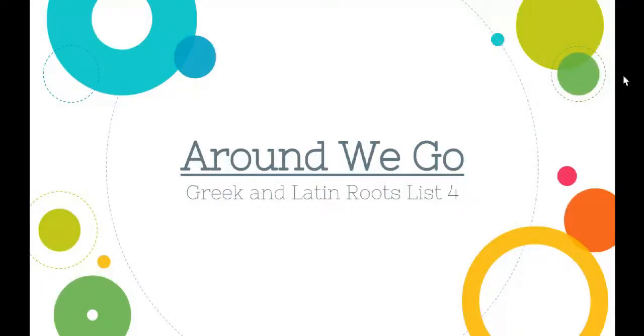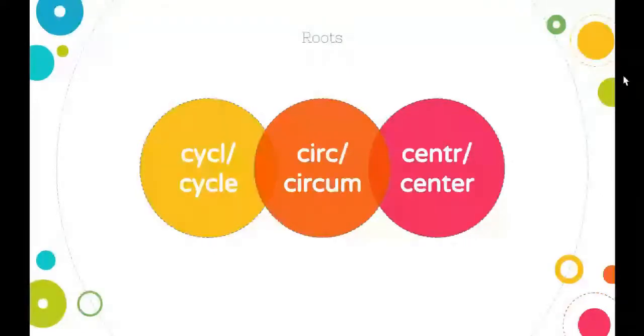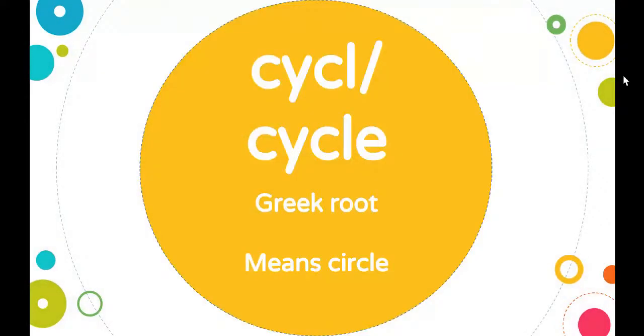Let's review your roots for a round-we-go review. They are cycle, circ and circum, and center. Cycle can be spelled two ways: C-Y-C-L or C-Y-C-L-E, and it means circle. It is a Greek root.